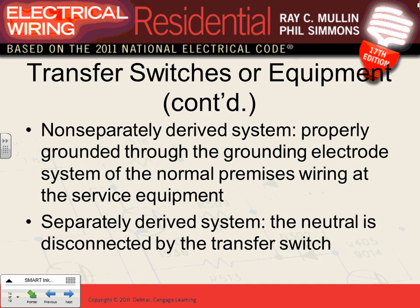There are two types of systems: separately derived and non-separately derived. The key difference: if you switch the neutral, you have a separately derived system. If you do not switch the neutral, you have a non-separately derived system. In a separately derived system, the generator neutral and the grid neutral are completely isolated from each other via a switch. In a non-separately derived system, they are tied together without switching.